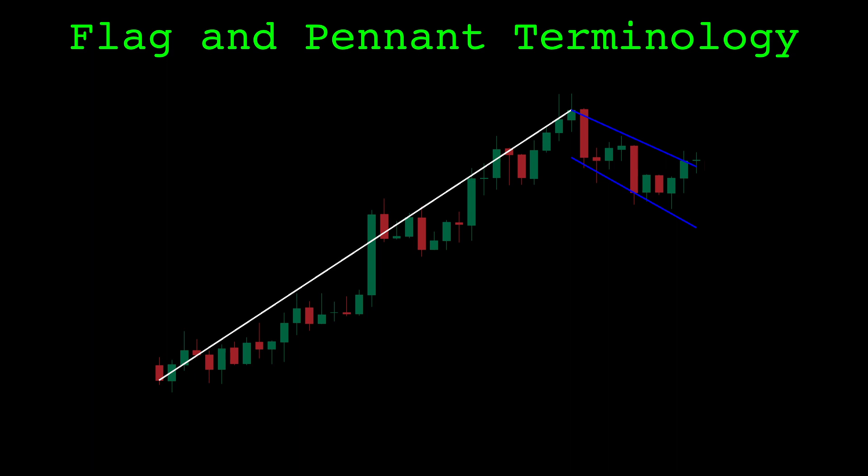Before we start, I need to define some terminology I'll use for the rest of this video. This is a bull flag that the code finds. The area the two blue lines encompass, I will call the flag. The preceding trend, marked with a white line, I will call the pole. The start point of the pole, I will call the base.